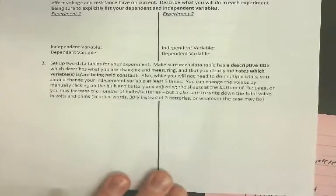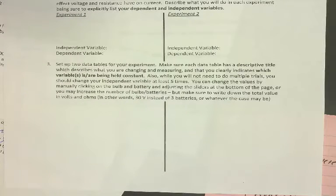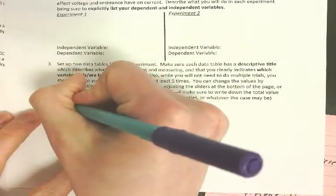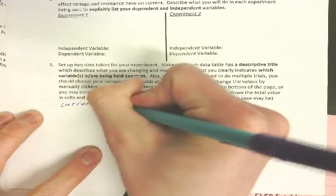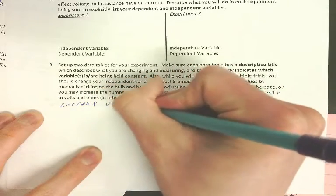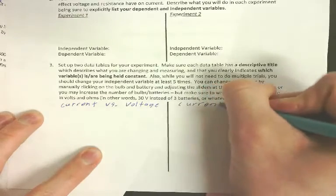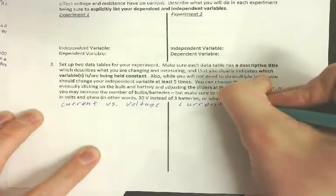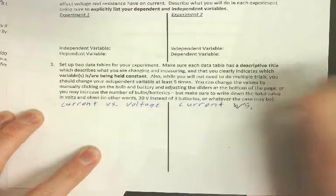Then you're going to set up two data tables. I'm going to briefly talk you through how to set these up. Your two experiments are going to be current versus voltage and current versus resistance.